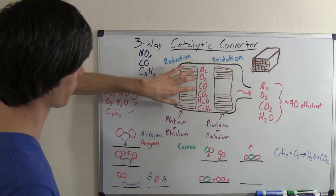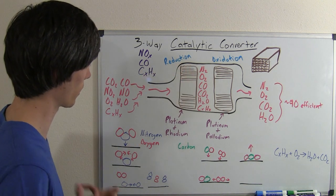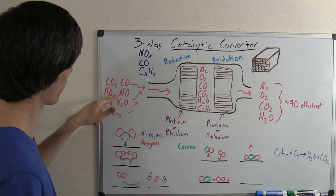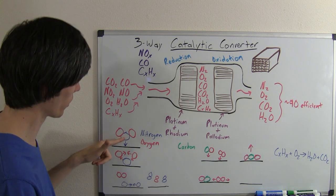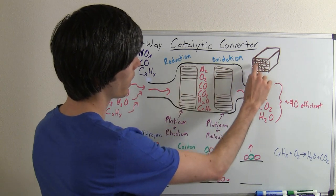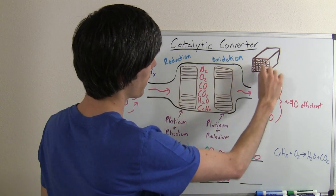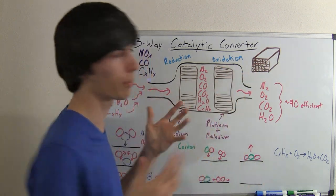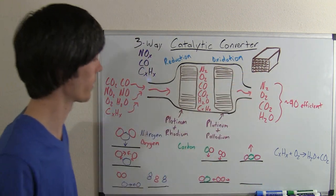Now the first step it goes through is this reduction catalyst, platinum and rhodium, and what happens is you're trying to eliminate the nitrogen oxides. So the nitrogen oxides will come into this catalyst, and inside it's just a bunch of tiny little ducts, little micro ducts, and there's thousands of them, and that's what the air is passing through, so you're trying to maximize surface area with that design.